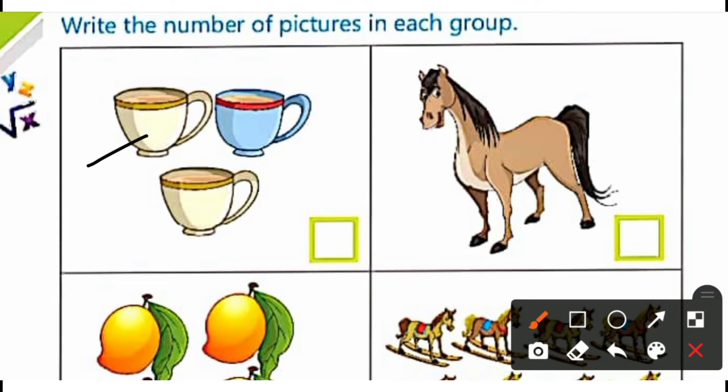First one. 1, 2, and 3. So here we have 3 cups. So we have written 3. This is 1 only.